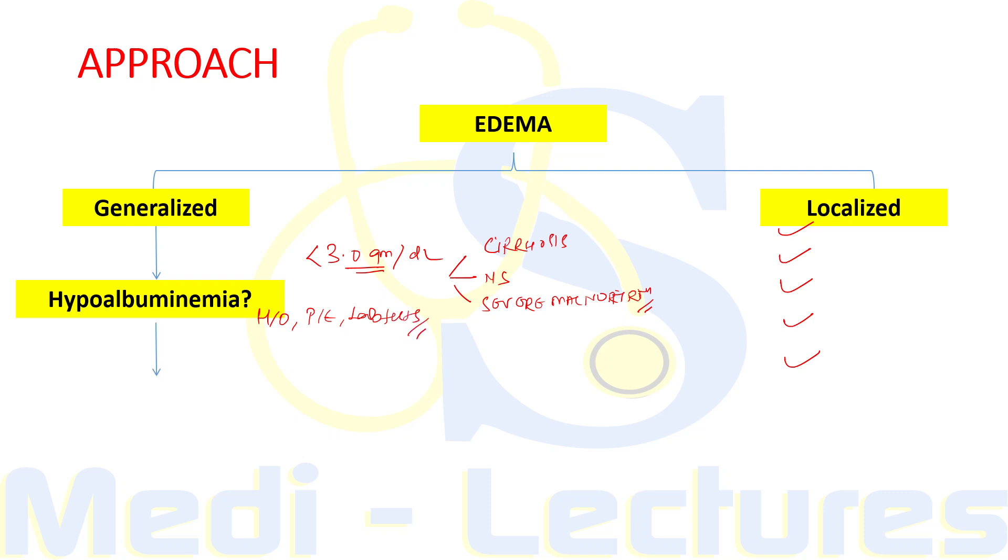We will see whether there is any evidence of heart failure. On examination, if JVP is raised, on auscultation we can hear S3, S4 gallop, any ECG findings. Brain natriuretic peptide and echo can be utilized to rule out heart failure. If heart failure is also ruled out.